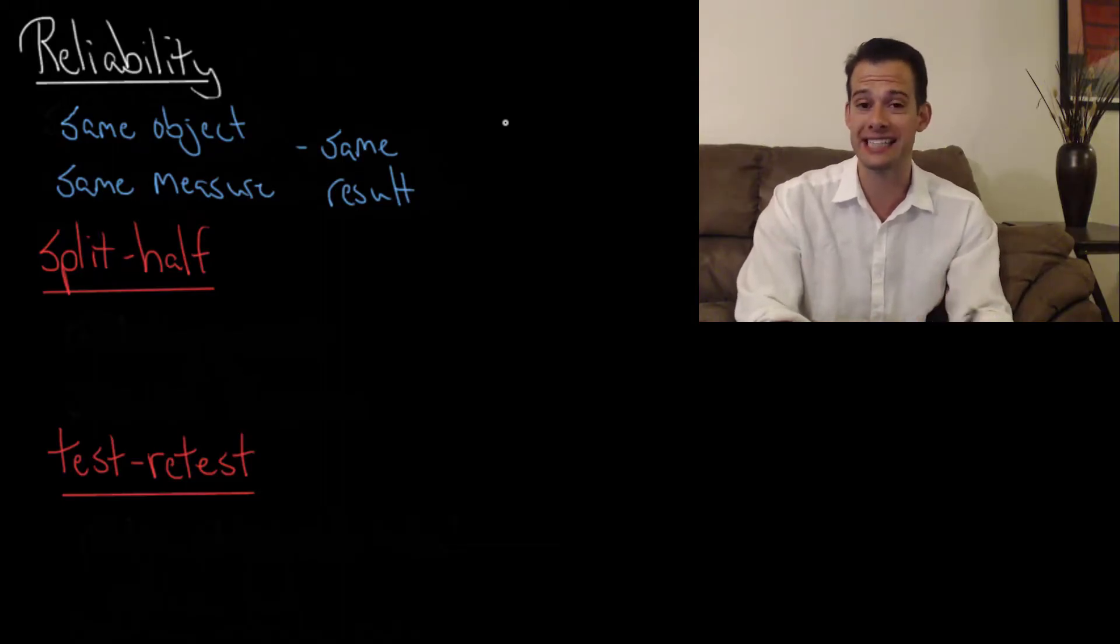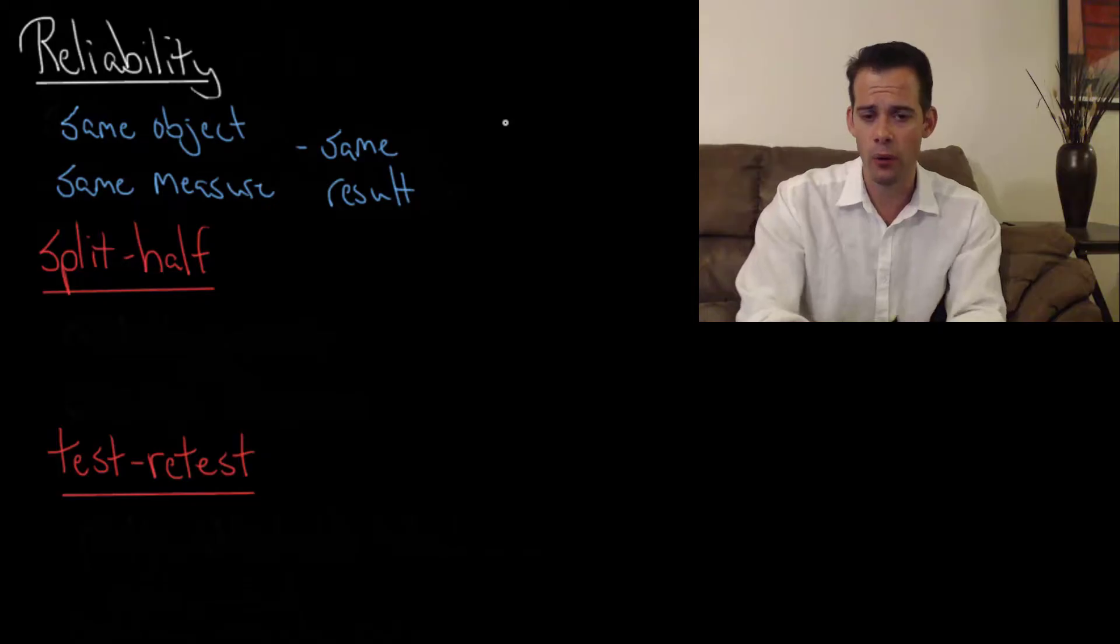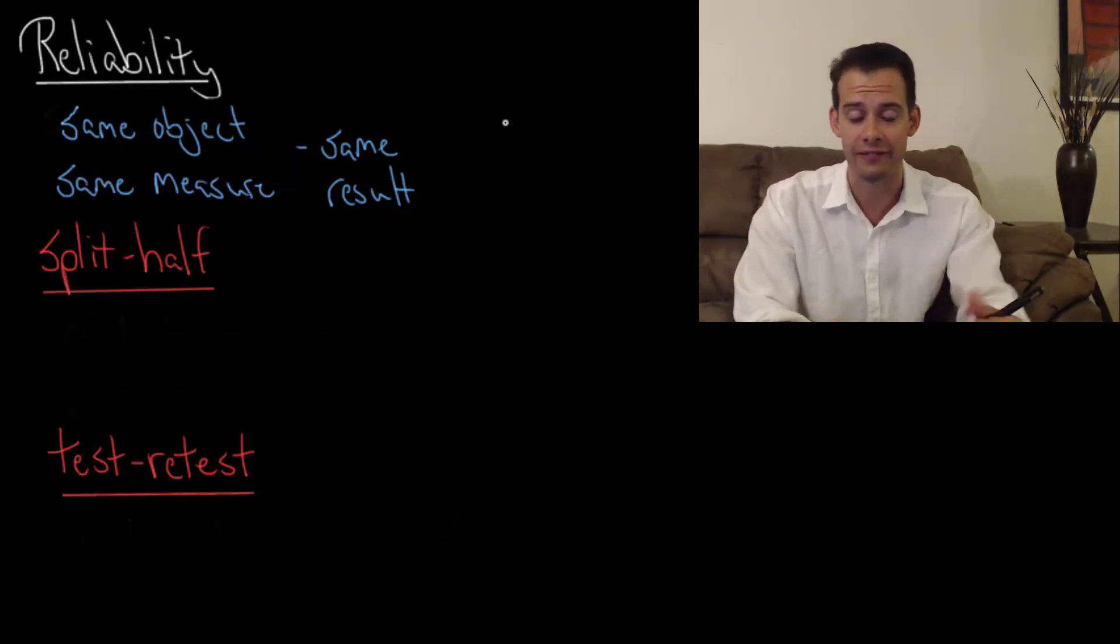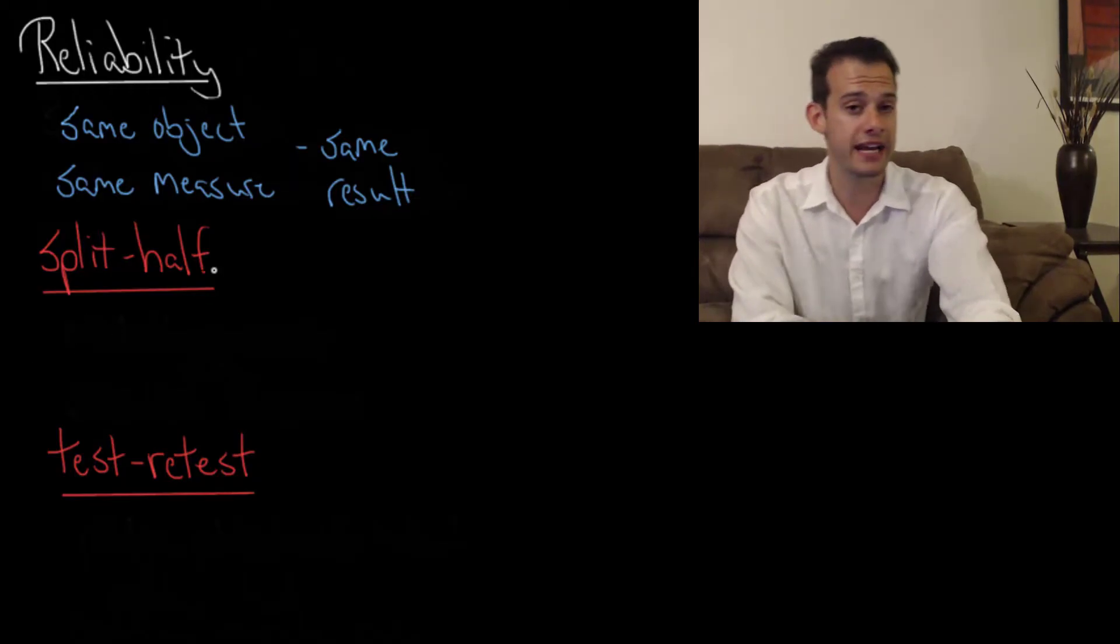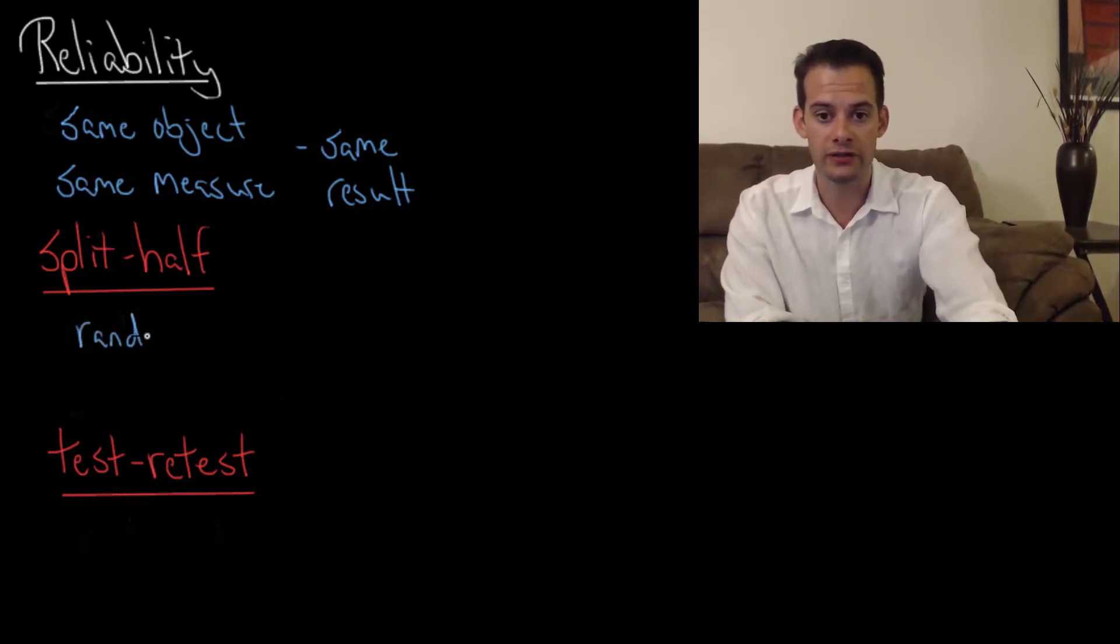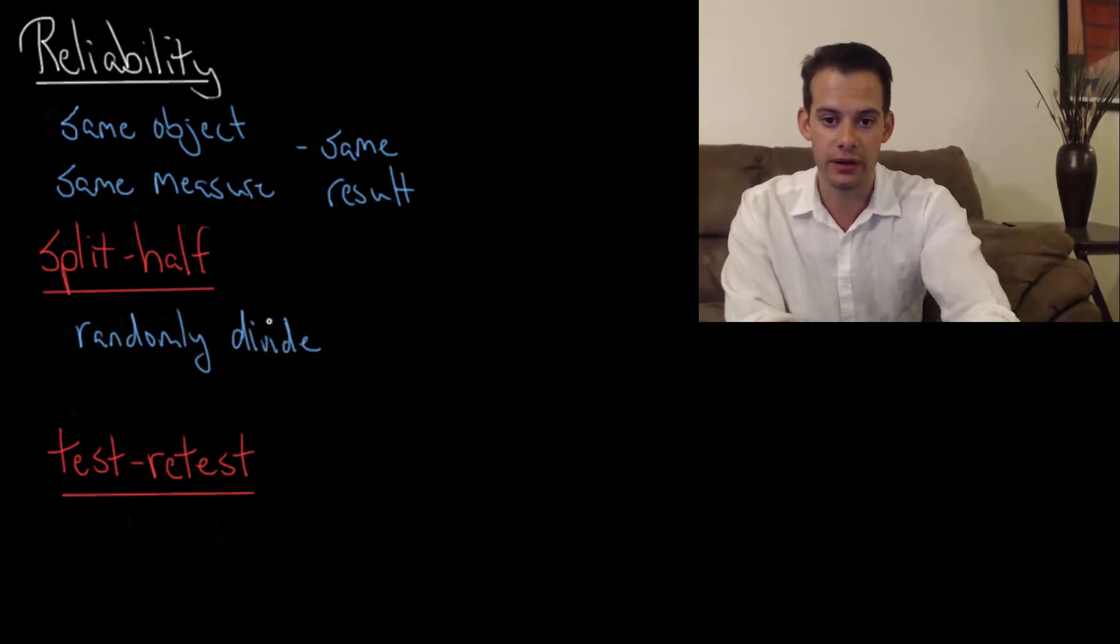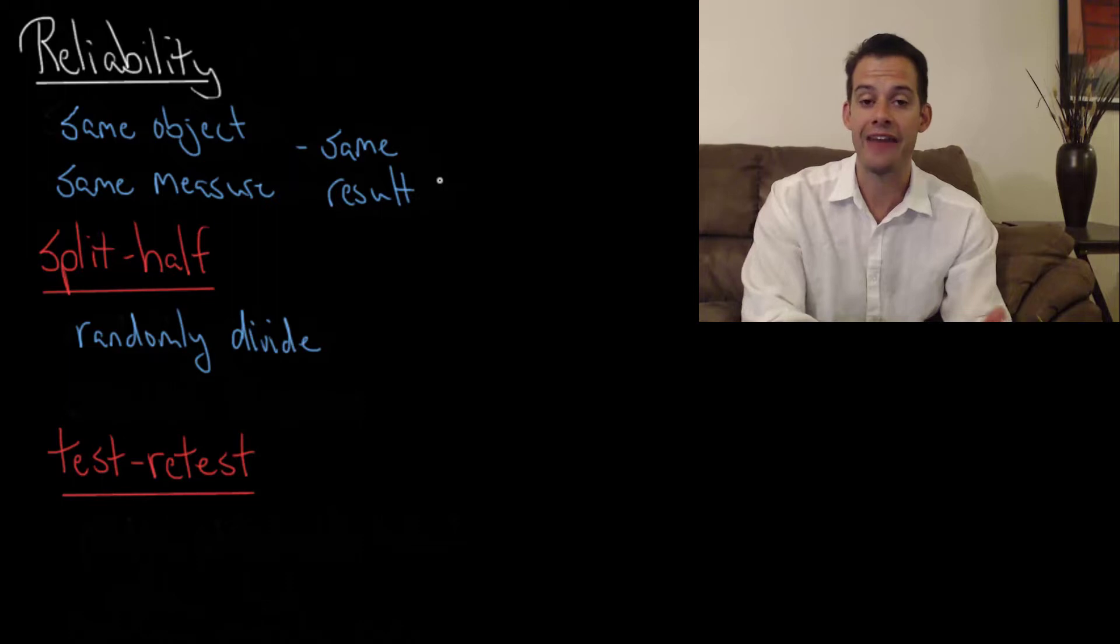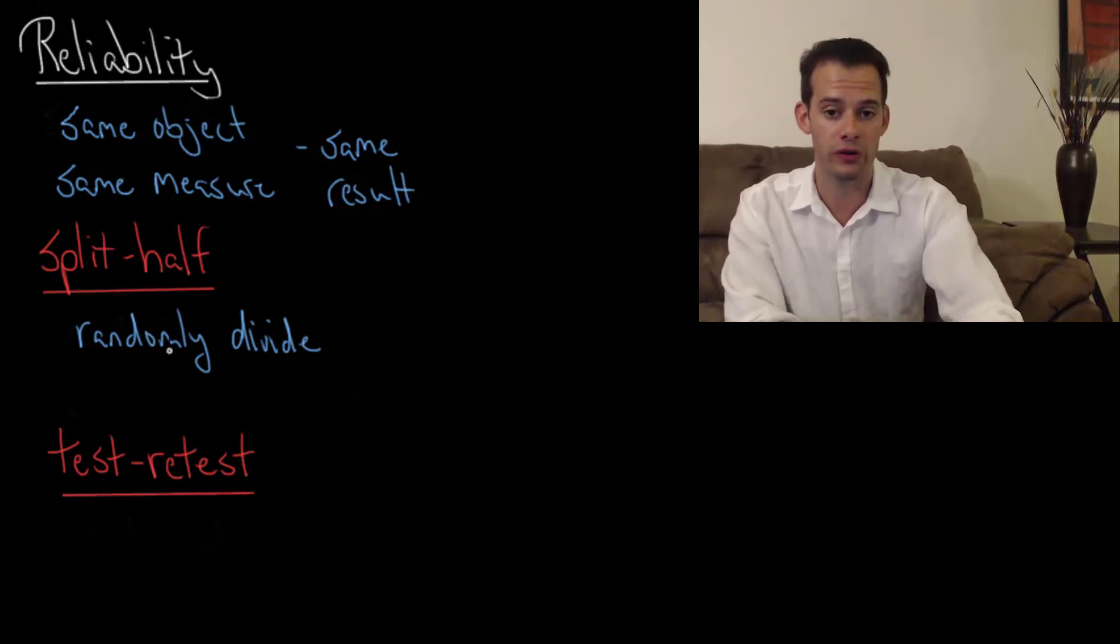Okay, so how do we go about assessing reliability? One way we can do it is what's called split half reliability. What we do in split half reliability is we split the test in half. So let's say you've taken an IQ assessment and it has 200 questions. Well what I might do is randomly divide all of those questions into two groups and then I calculate two IQ scores for you.